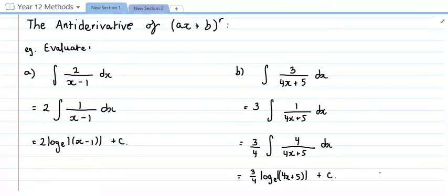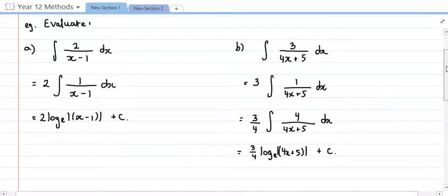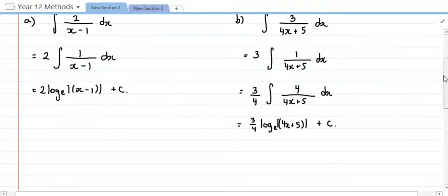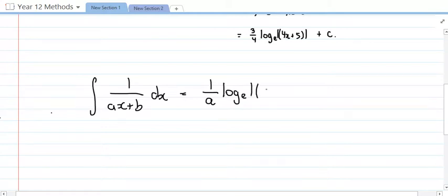Now, there is a rule which goes along with this as well. Personally, I don't like the rule. I like to be able to think through a problem like that. I think it's quite logical, it's that nice balancing act. But if you really want the rule, the antiderivative of one over ax plus b with respect to x is always going to be equal to one over a times log e of the modulus of ax plus b, and then remembering to have a plus c on the end. So that should be a more vertical line.